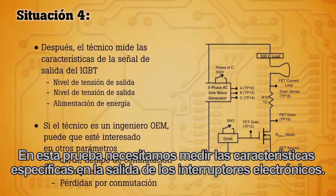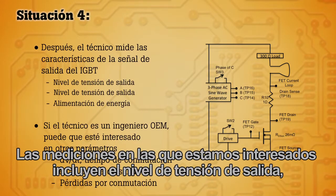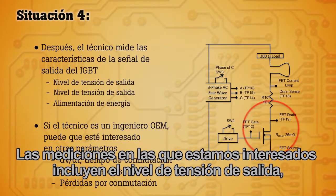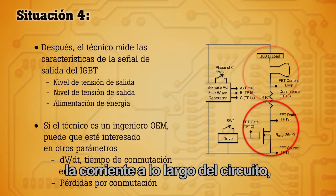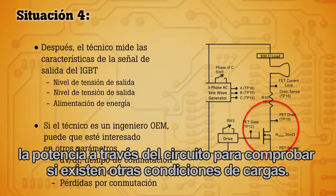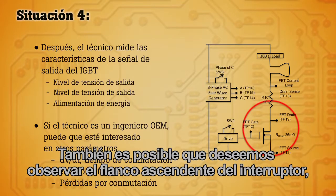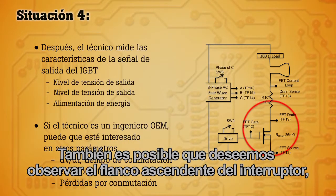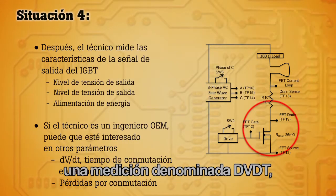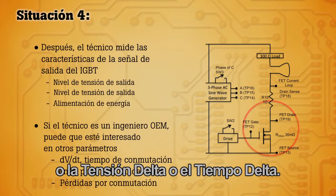For this test, we need to measure specific characteristics on the output of the electronic switches. Measurements we're interested in include the output voltage level, the current through the circuit, and calculating the power through the circuit to see if there are any load conditions. We might also want to look at the fast rising edge of the switch — a measurement called dvdt, or delta voltage over delta time.